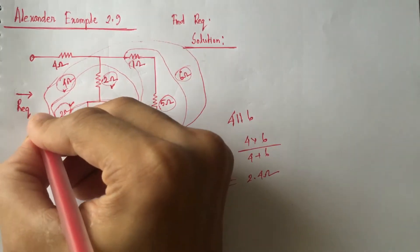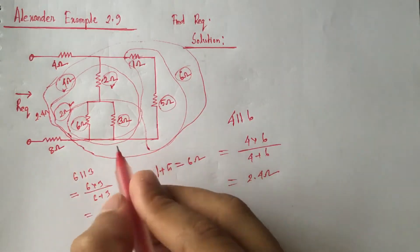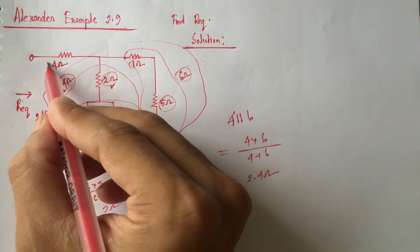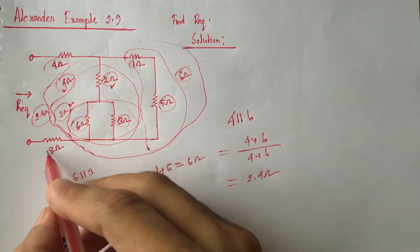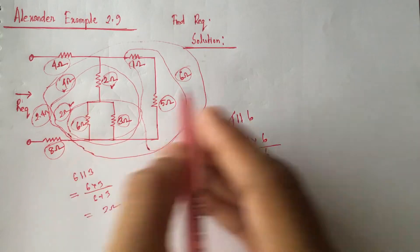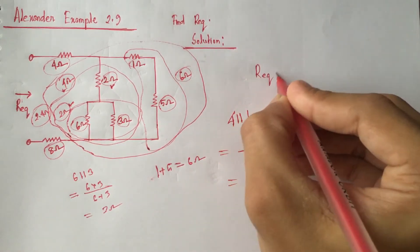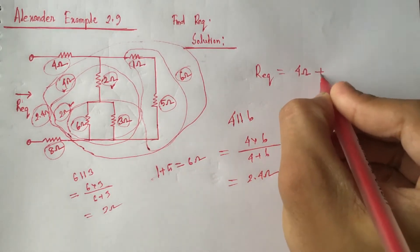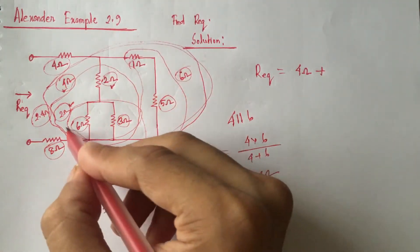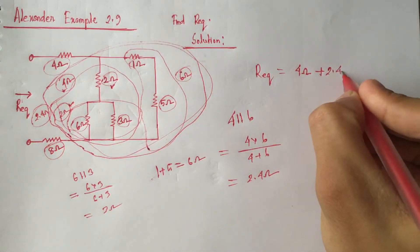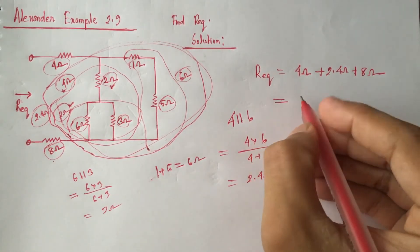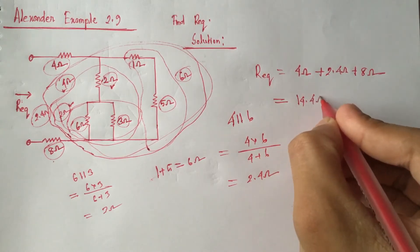The equivalent resistance of this whole part is 2.4 ohm. So our total equivalent resistance equals the addition of 4 ohm, 2.4 ohm, and 8 ohm, since all these resistances are in series. That gives us 4 ohm plus 2.4 ohm plus 8 ohm, which equals 14.4 ohm.